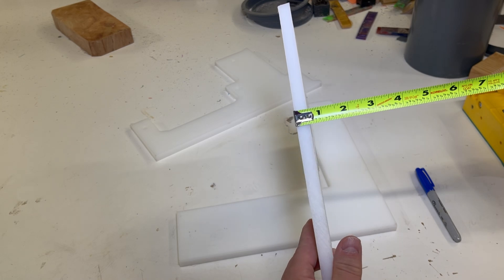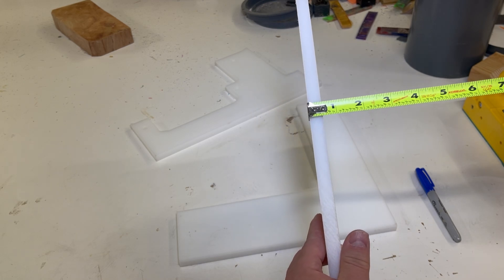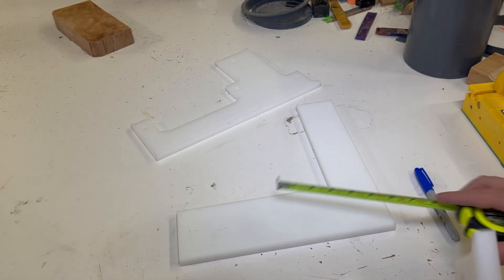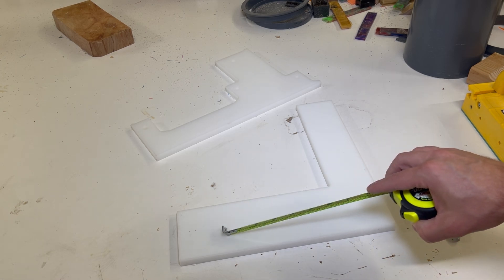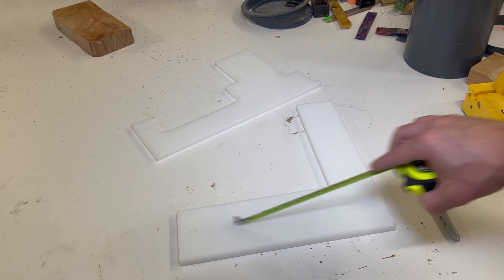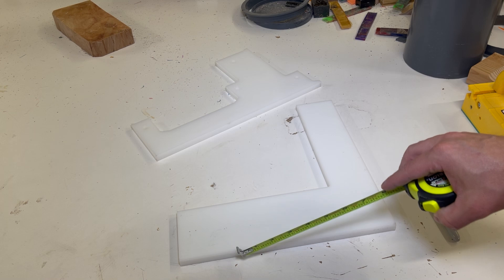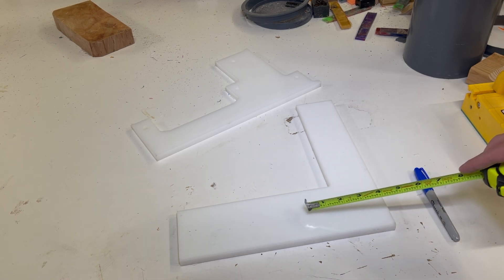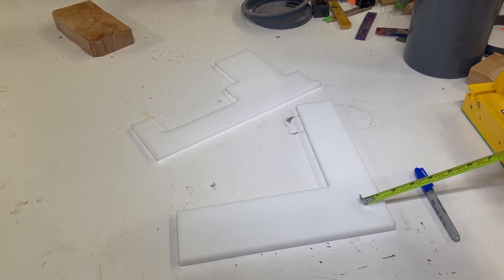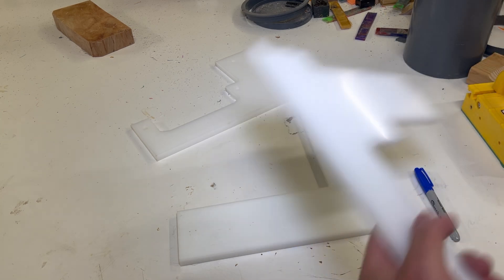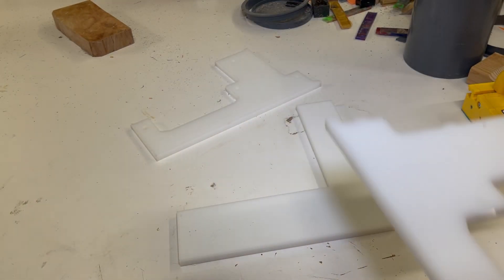This is half inch thick HDPE. You can tell it's exactly half an inch. So I want this to be two inches wide on the inside, six inches long. So that means this needs to be three inches by seven inches. And I'm going to use this excess over here for the ends too. I'll just go through and make all this stuff real quick.